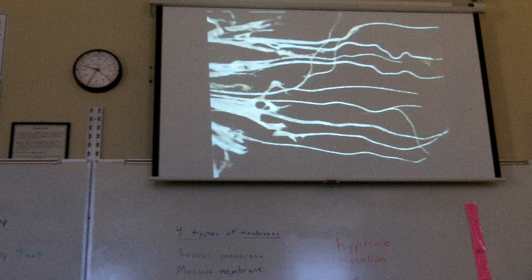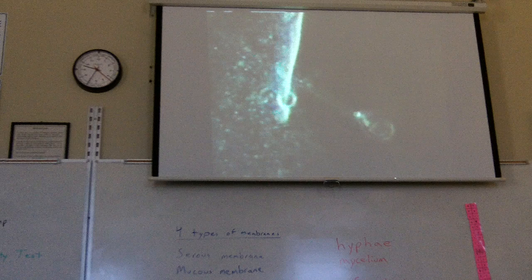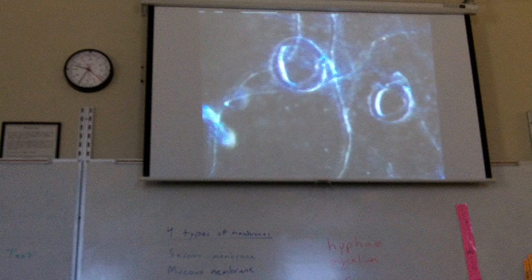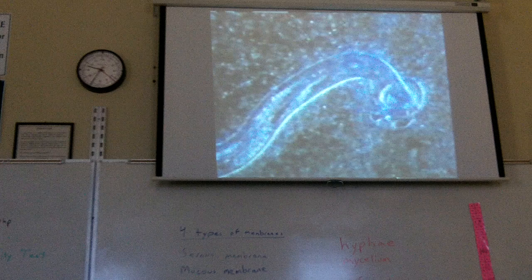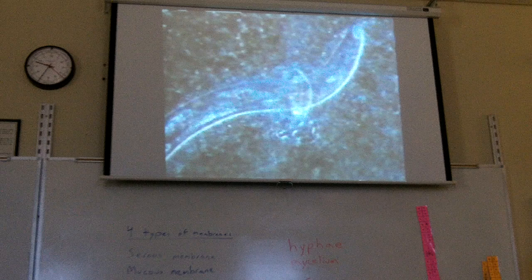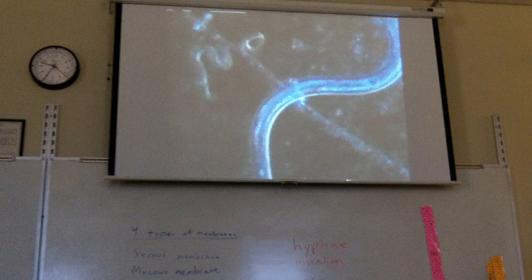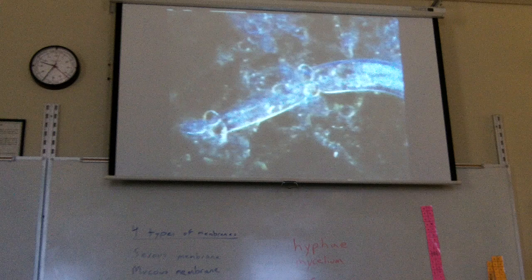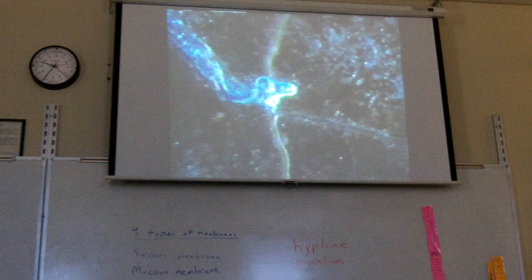Cellulose is very low in nitrogen. To get that, some fungi trap living animals. The microscopic threads develop tiny lassoes that give off a chemical attracting microscopic worms — nematodes. One of them nuzzles into the ring, and the fungus suddenly draws its lasso tight. The worms are killed and the fungus has its nitrogen. All this takes place out of sight, below ground or within the body of a dead plant. Only when a fungus is ready to reproduce does it make itself more visible.